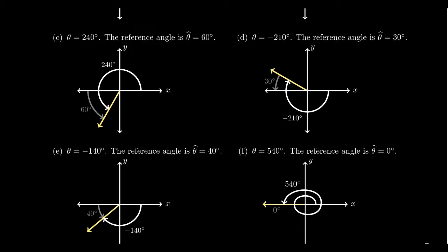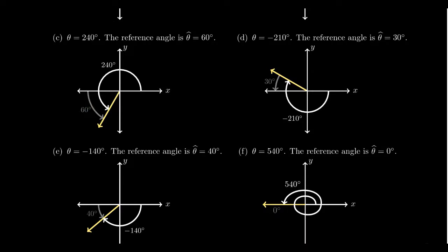Let's move on to example C — an example of an angle that terminates in the third quadrant. If you take theta to be 240 degrees, that terminates here in the third quadrant. The reference angle will be the angle between the x-axis and the terminal side — a positive acute angle. So for 240 degrees, the reference angle would be 60 degrees. In the third quadrant, you figure out what angle measure is past 180 degrees — how far past 180 degrees are you. So theta hat equals theta minus 180 degrees.